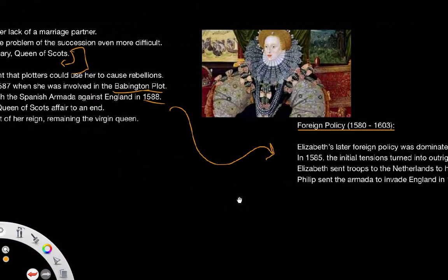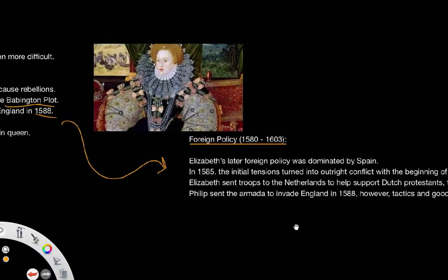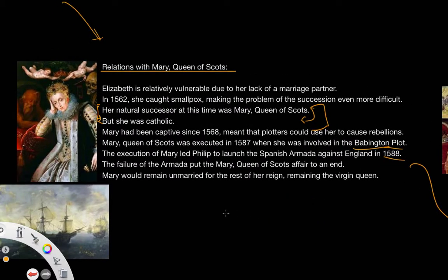However, the Armada did fail. It was due to poor tactics and good luck in terms of favourable weather on the English side that caused the plan to fail. The failure of the Armada really led to the end of the Mary, Queen of Scots issue, because the Armada was almost seen as a revolt against her unjust execution — a holy war against Protestant heretics — which is how it was viewed in both Spain and England.